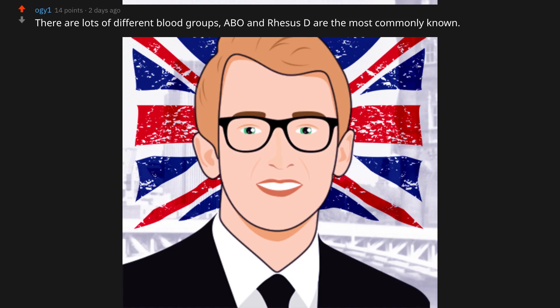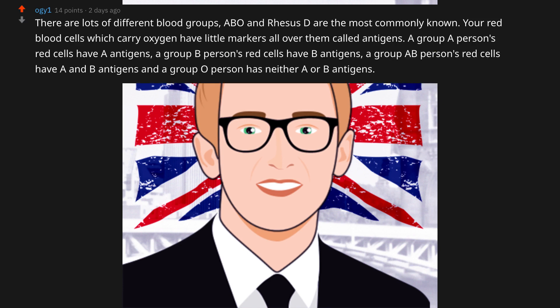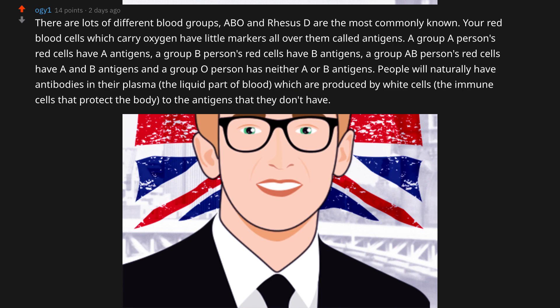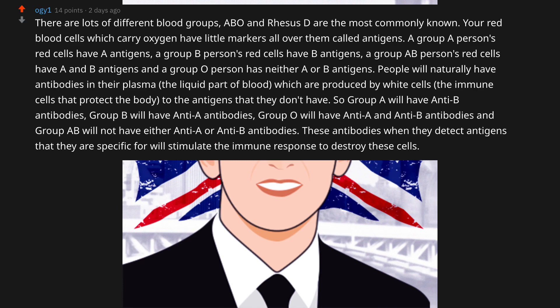On the flip side, O negative cannot receive from anyone but their own blood type. There are lots of different blood groups; ABO and Rhesus D are the most commonly known. Your red blood cells have little markers called antigens. A group A person's red cells have A antigens; group B has B antigens; group AB has both A and B antigens; group O has neither. People will naturally have antibodies in their plasma — produced by white cells — to the antigens they don't have. So group A will have anti-B antibodies, group B will have anti-A antibodies, group O will have both anti-A and anti-B antibodies, and group AB will not have either.